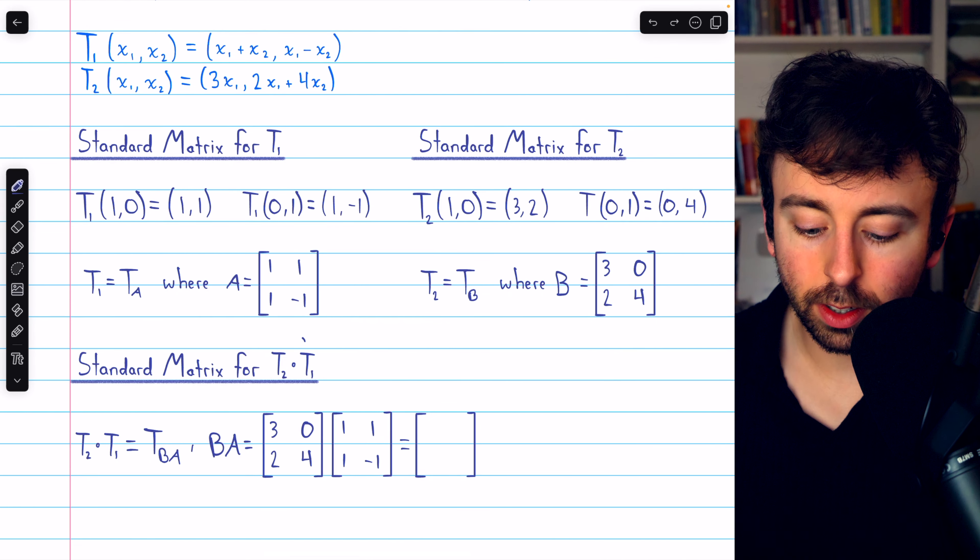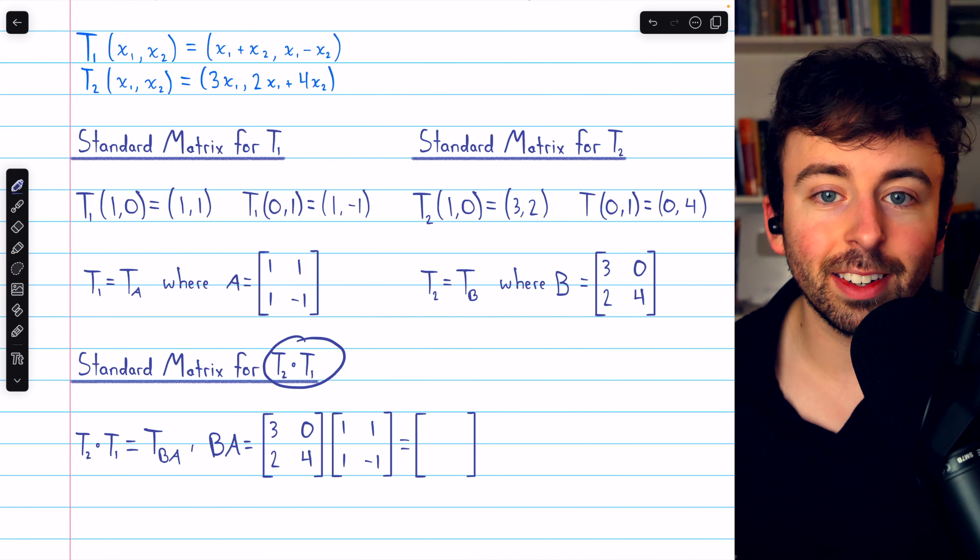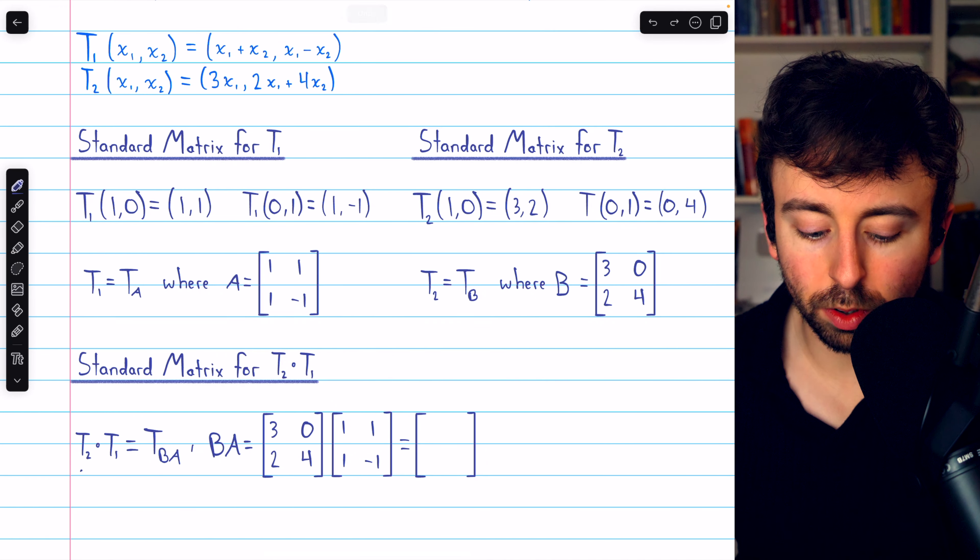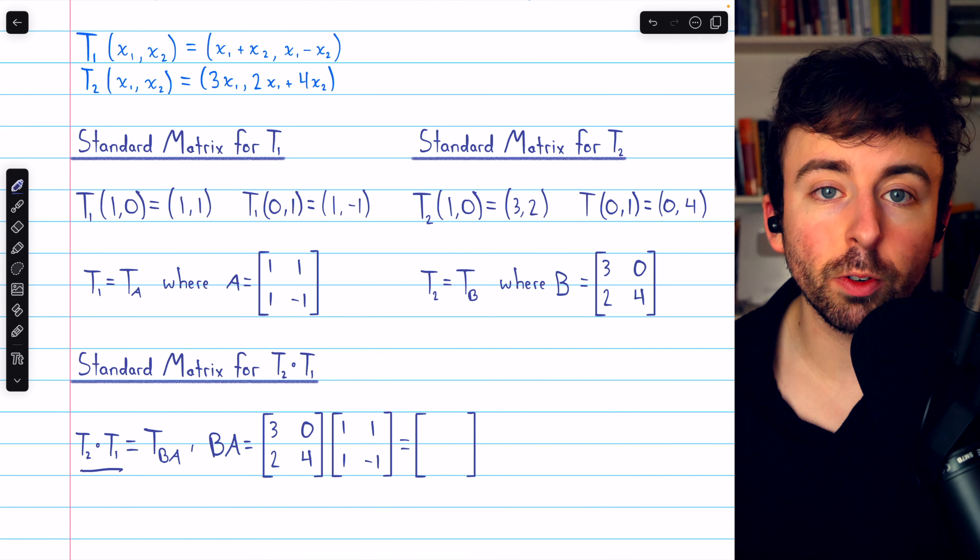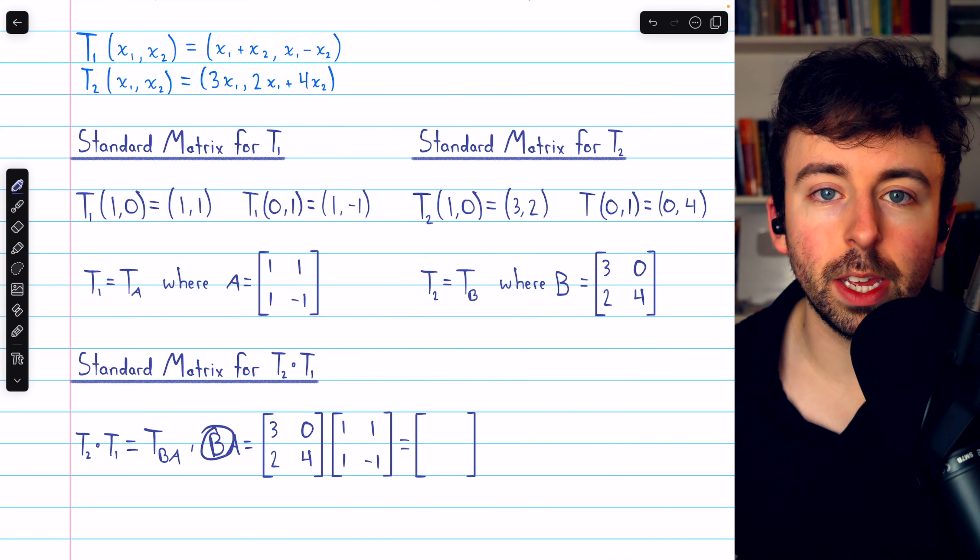Now that we found the standard matrices for T1 and T2, finding the standard matrix for their composition, T2 circle T1, is as easy as multiplying the standard matrices together. Since it's T2 circle T1,